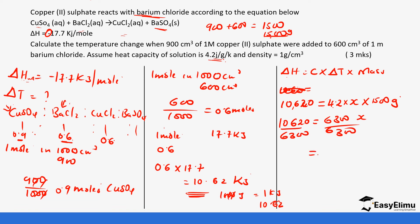This gives us a temperature change of 1.7 degrees Celsius. You can take your time and go through the calculation again step by step, but that's how the calculation is done. That's it on heat of precipitation — see you in the next session.